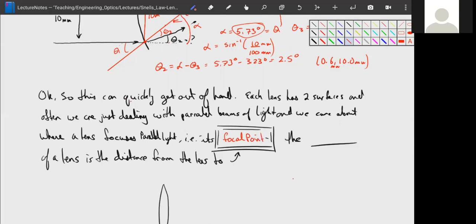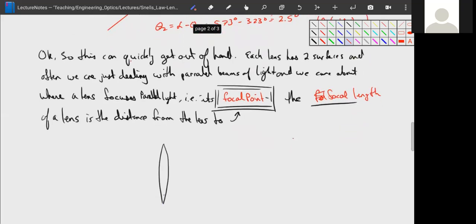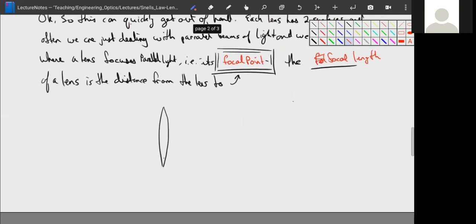The focal length of a lens is the distance from the lens to the focal point. So if we have a lens here, let's draw our rays, we have a parallel beam entering it. What we mean by a parallel beam is several rays that are parallel to each other.